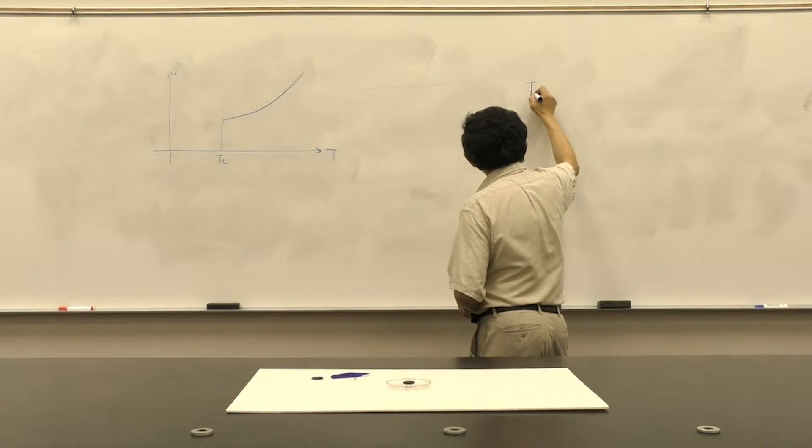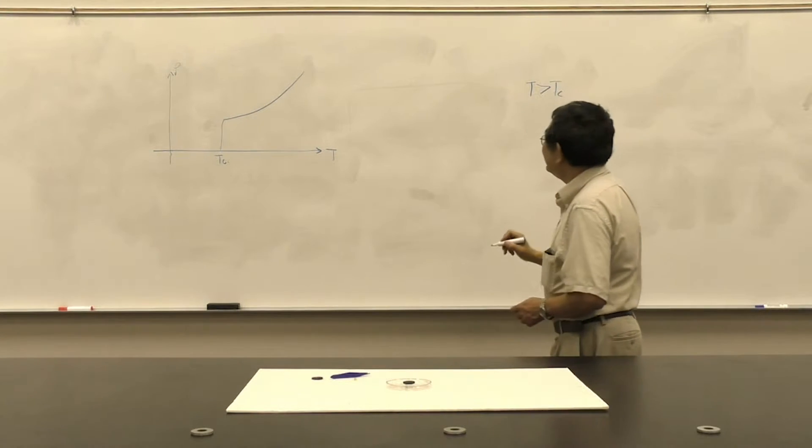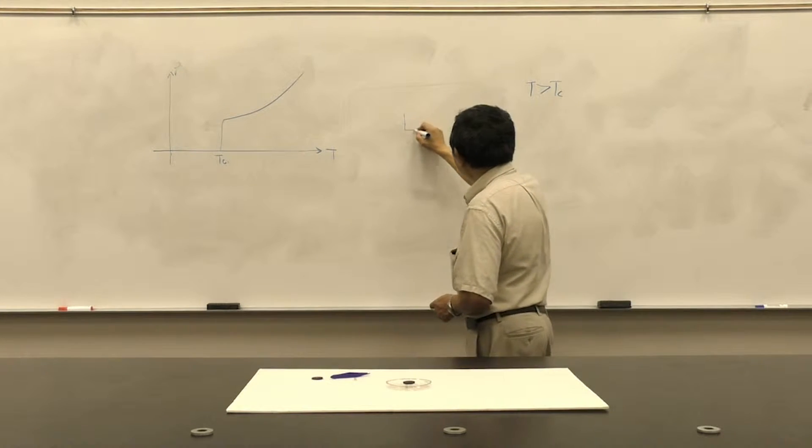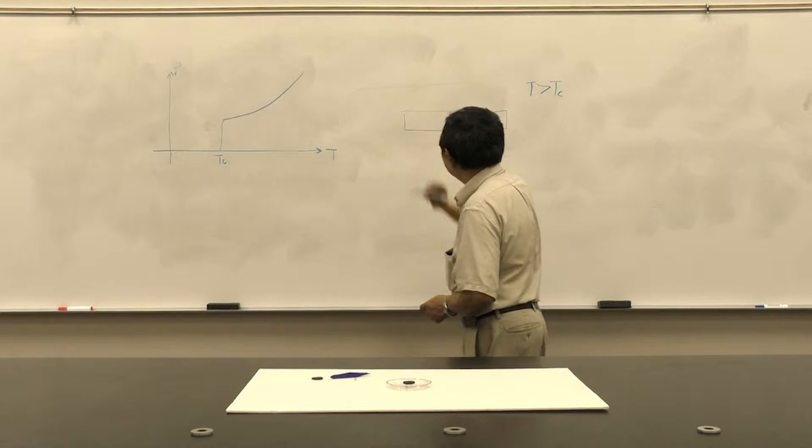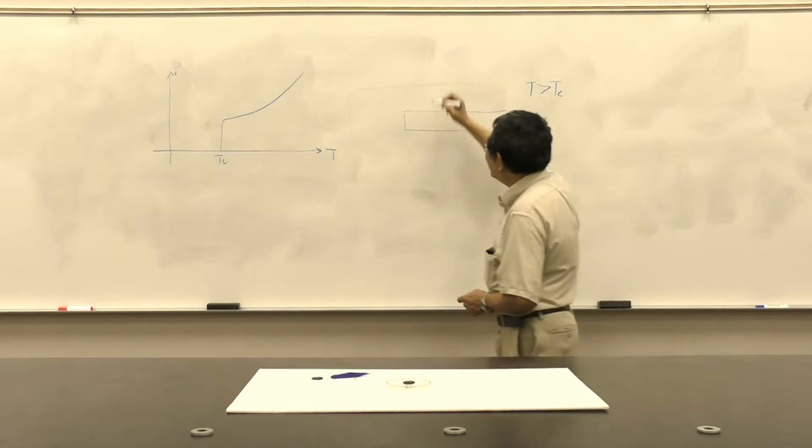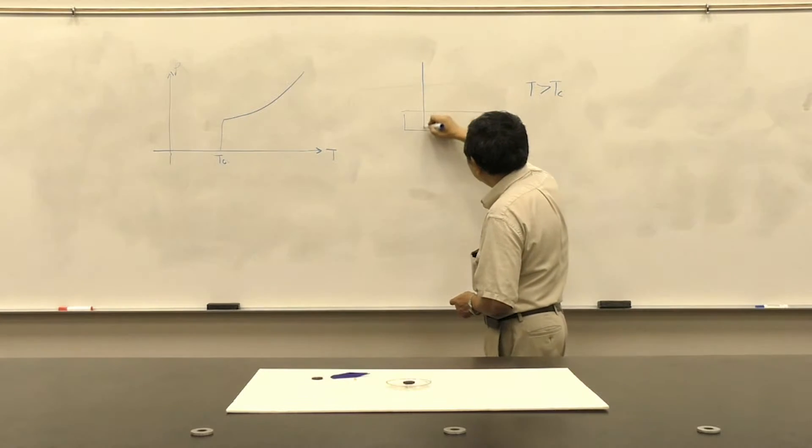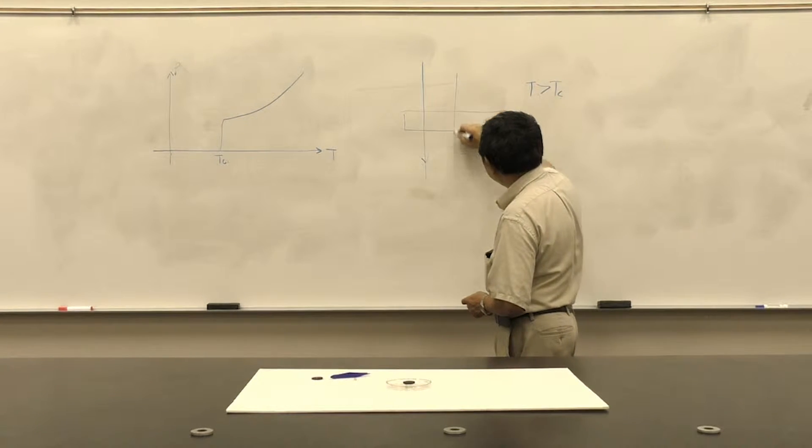When temperature is above the Tc, the material is still normal, it's not superconducting yet. And if you apply a B-field, the B-field will just go straight through it.